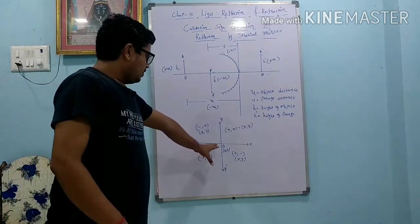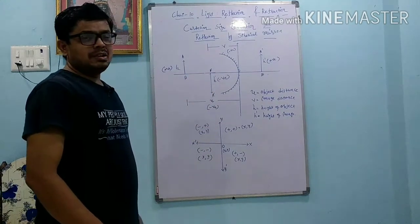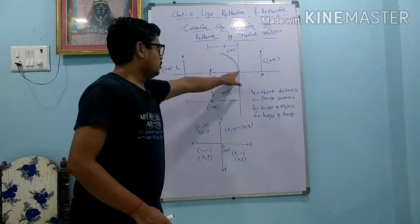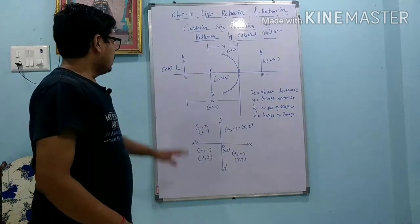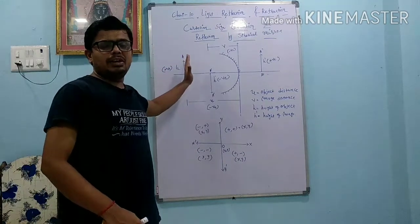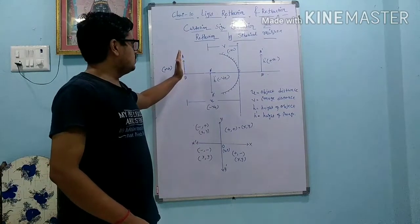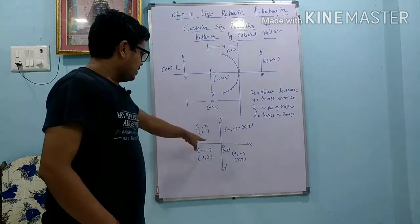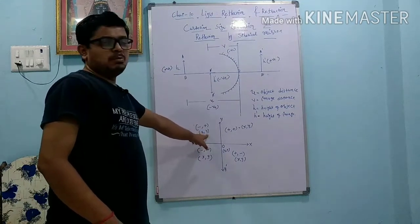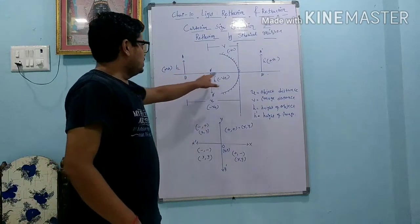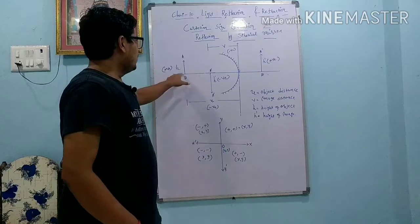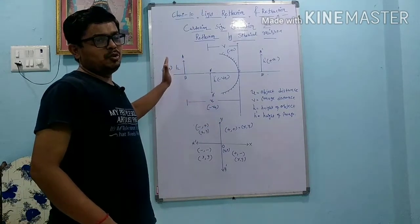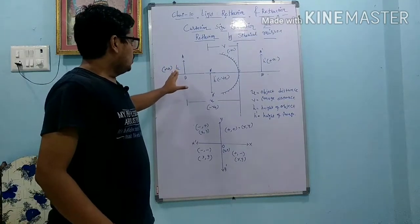Now we will apply this system to the lens and mirror. At the origin we will keep the lens or mirror at the pole. Dear students, always remember: the object is always kept on the left-hand side. We always consider that light falls from left to right. Left-hand side means X is negative. So whatever distance is between O and the object, that is always negative - U is always negative.